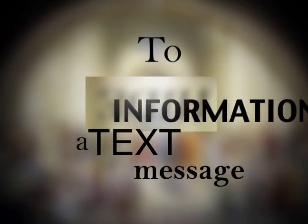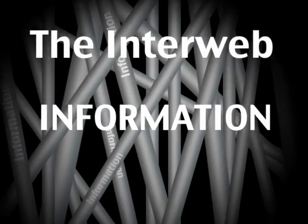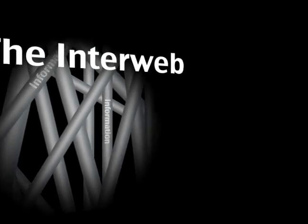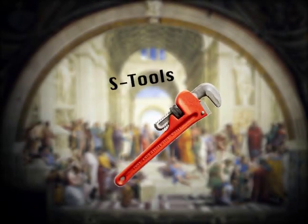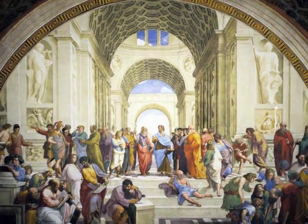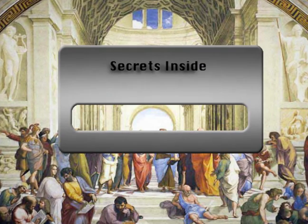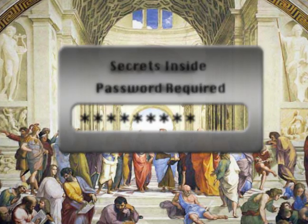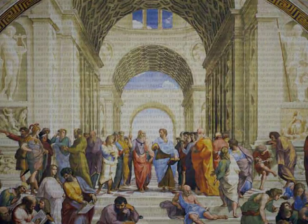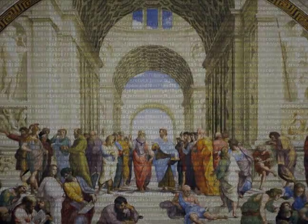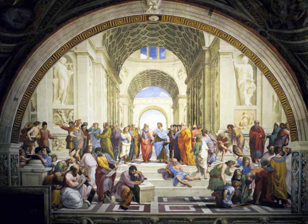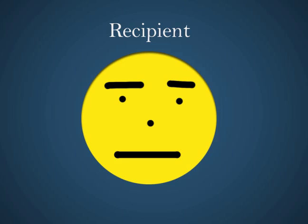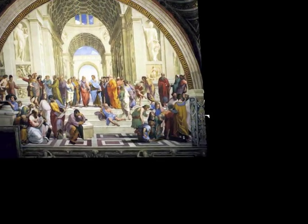To hide a text message in a picture, someone can download a steganography program for free off of the internet, such as sTools. Once you've installed the program, you create a text file and select an image to hide it in. The program usually calls for a passphrase that will be used to decrypt the message. You then tell the program to combine the text file with the image file, and a new picture with the embedded text is created. In order to view the hidden text, a recipient must have the passphrase and a program to unlock it.